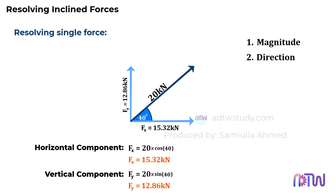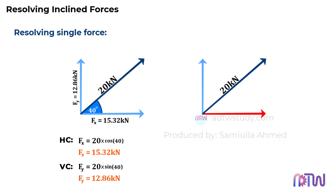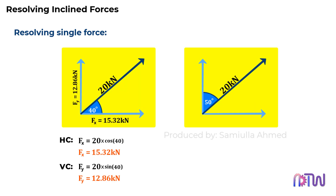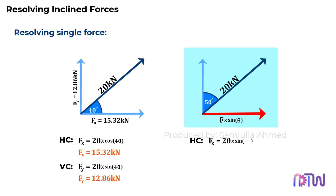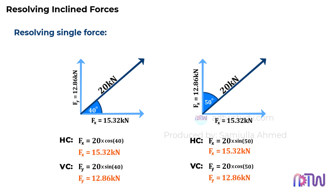Key points to remember: if the force makes an angle with the horizontal, to find the horizontal component we multiply that force with the cosine of the angle made. Consider another situation — if instead of a 40 degree angle with the horizontal, we had a 50 degree angle with the vertical. These two figures are exactly the same. In this case, to find the horizontal component we multiply force F with the sine of 50 degrees, and to find the vertical component we multiply force F with the cosine of 50 degrees. In both examples, the final values of the horizontal and vertical components will be the same. Therefore, it's very important to see where the angle is provided, and based on that, decide whether to multiply the force with cosine or sine to get the required component.